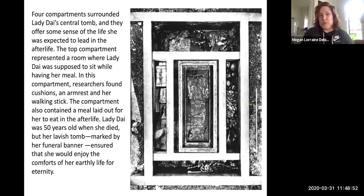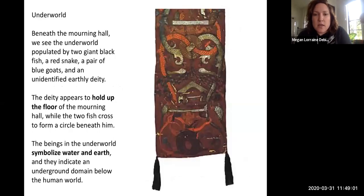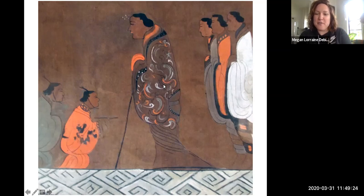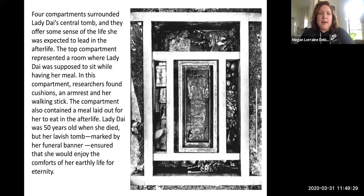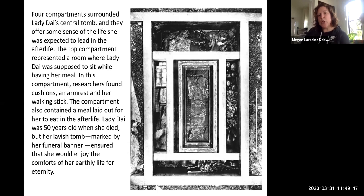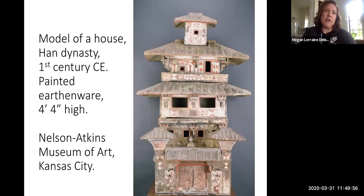Inside the tomb they found all sorts of other interesting things: cushions, armrests, clothing, a walking stick — and she is depicted holding a walking stick in the banner too. So all of the things she would need — silverware, bowls, everything to eat in the afterlife — are buried with her. This is pretty typical for elite individuals to have this kind of elaborate tomb, and this is how we can learn about life and art during the Han Dynasty.